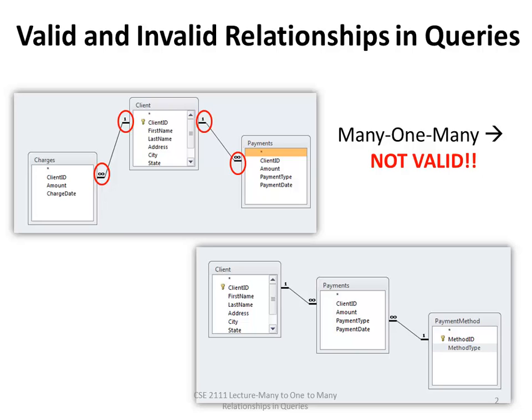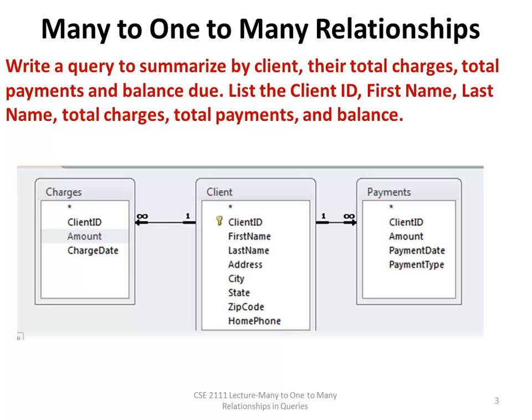In other words, we can create this query and run it, but it will not display a valid dynaset. However, if you're using a query with two or more tables and the tables have a one-to-many-to-one relationship, then you can create a valid query using one step. This is true whether your relationship is an inner join or an outer join.